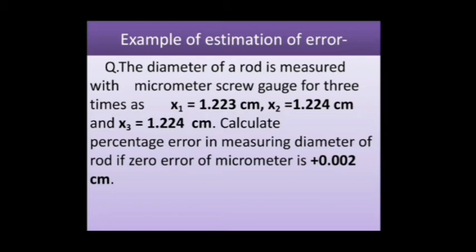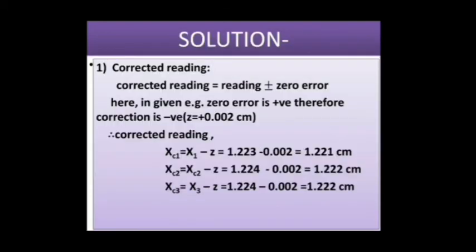Example: The diameter of a rod is measured with a micrometer screw gauge for three trials: x1 = 1.223 cm, x2 = 1.224 cm, and x3 = 1.224 cm. Calculate the percentage error in measuring the diameter of the rod, if the zero error of the micrometer is +0.002 cm. For simplicity, only three readings are taken here.